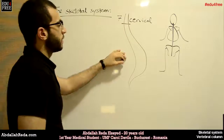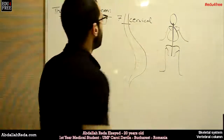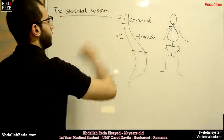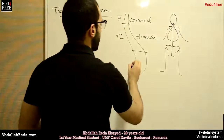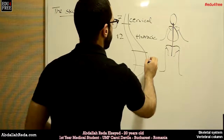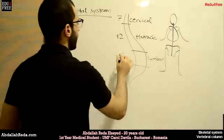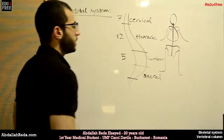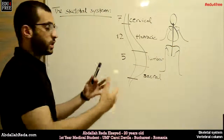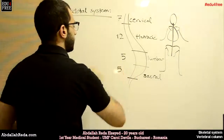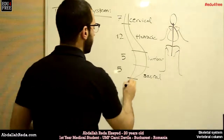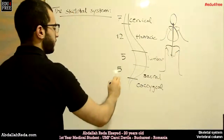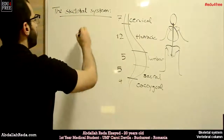Then we go to the next region, which is the thoracic region — the area of the thorax or chest. This is the longest region and has twelve vertebrae. Then we have the lumbar region, which is the area of the lower back, and this one has five vertebrae. Then we have the sacral region, the part where the pelvis is attached, which also has five vertebrae. Then we have the coccygeal region — the coccyx — which has around three or four vertebrae. This sums up to around 33 vertebrae.